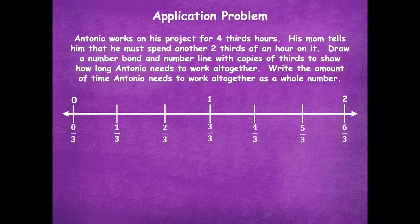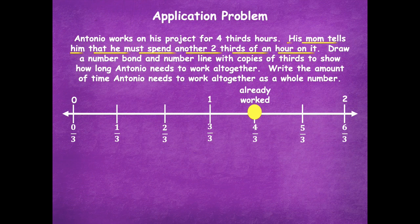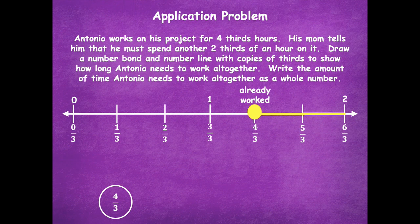So we have all of our fractions labeled. Antonio works on his project for four thirds hours, so I need to find four thirds on the number line and put a dot — that's what he already worked. Now his mom says he must spend another two thirds of an hour on it, so I'm going to start there and count one third, two thirds more.